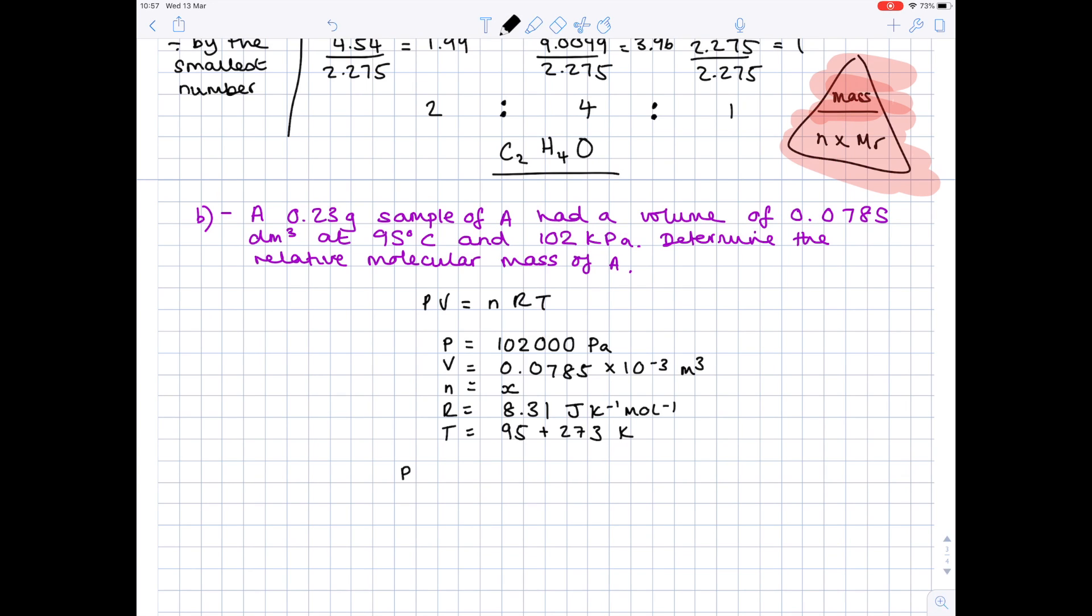So now we're ready to find out the number of moles. Our pressure is 102,000 pascals. Our volume is 0.0785 times 10 to the minus 3. Number of moles is what we're after. R is 8.31. Temperature is 273 plus 95 to get 368. Sort out the left-hand side first by doing 102,000 times 0.0785 times 10 to the minus 3. And you get 8.007. To sort out the right-hand side, we need to do 8.31 times 368. And you get 3058.